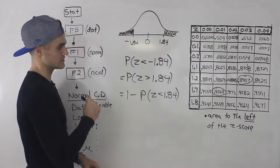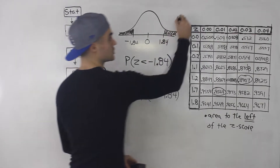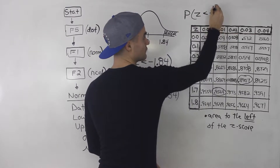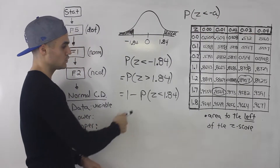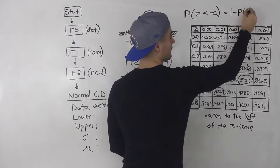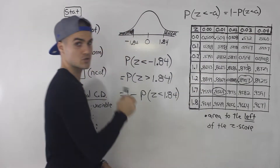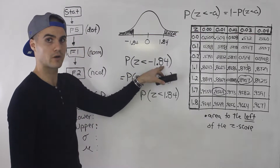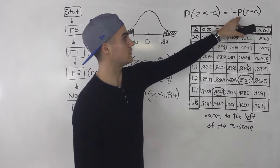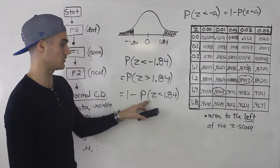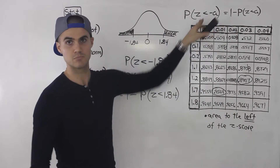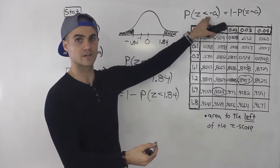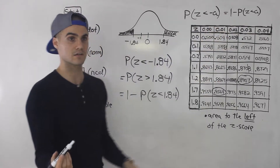Let me state a general rule here. Whenever you have the probability that z is less than a negative number — let's call it negative a — you can always rewrite that as 1 minus the probability that z is less than the corresponding positive a value. So the probability that z is less than negative 1.84 equals 1 minus the probability that z is less than positive 1.84. That a can be anything — for example, the probability that z is less than negative 1 is the same as 1 minus the probability that z is less than positive 1.